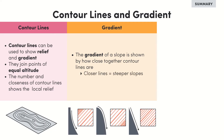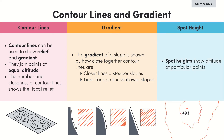The gradient of a slope is shown by how close together the contour lines are — lots of contour lines close together means the slope is steeper, while if they are far apart the slope is shallower. As well as contours, maps also show altitude using spot heights at particular points such as the top of hills. Thanks for listening everyone and see you again soon.